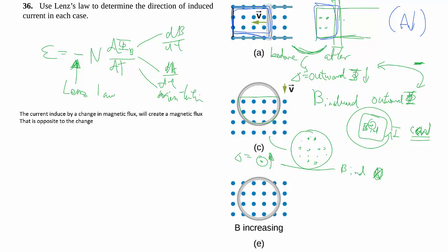And so if you have a loop and you have to make a B field that goes that way, you know that you have to go clockwise just like that.